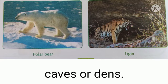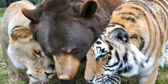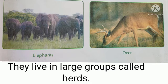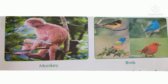Lions, tigers, and bears live in caves or dens, and they live in small groups. Elephants, deer, and some other animals take shelter under trees and live in large groups called herds. Monkeys sleep on trees, and birds build their nests on trees.